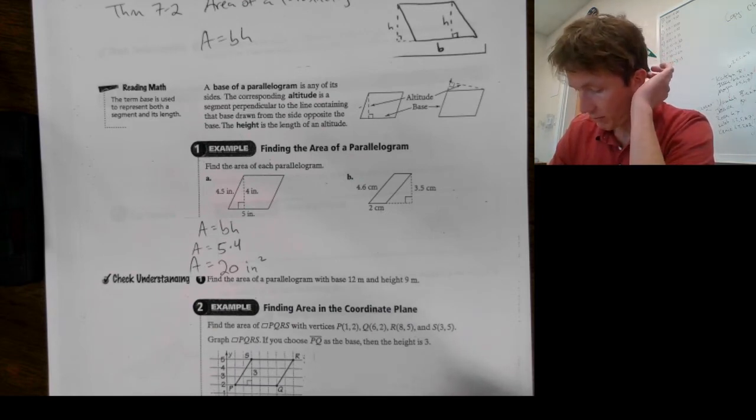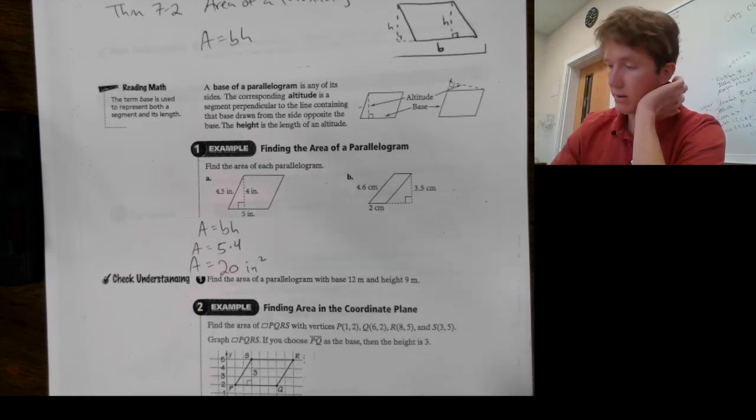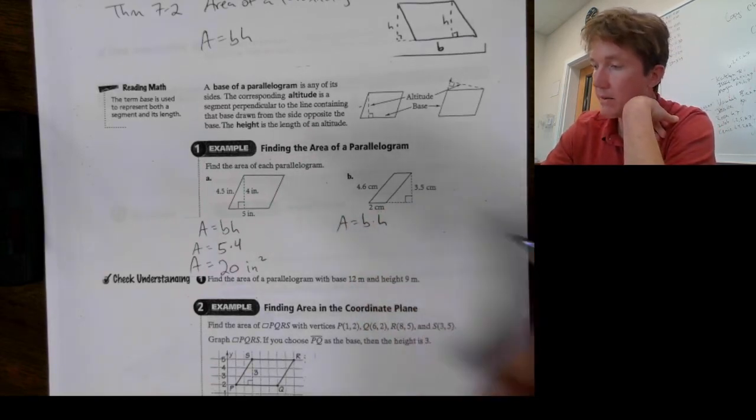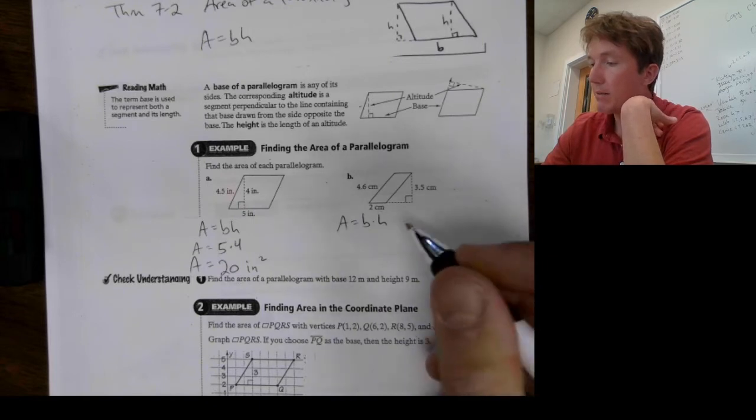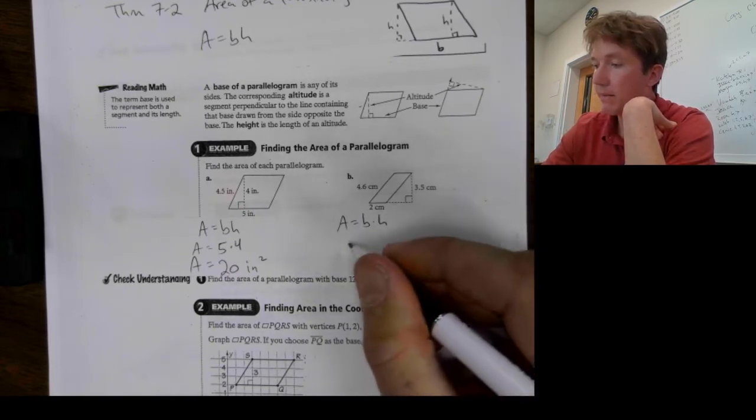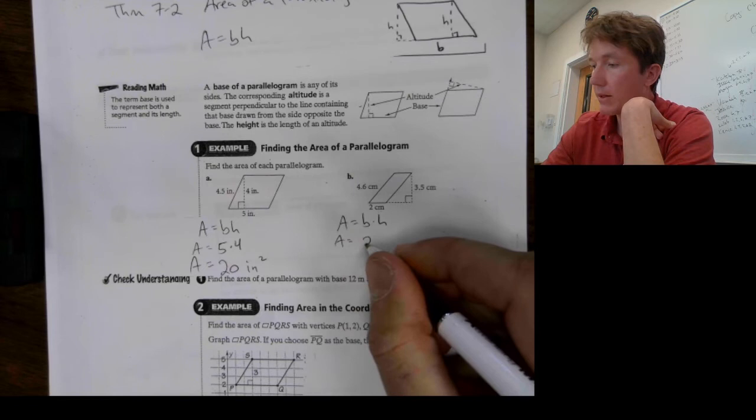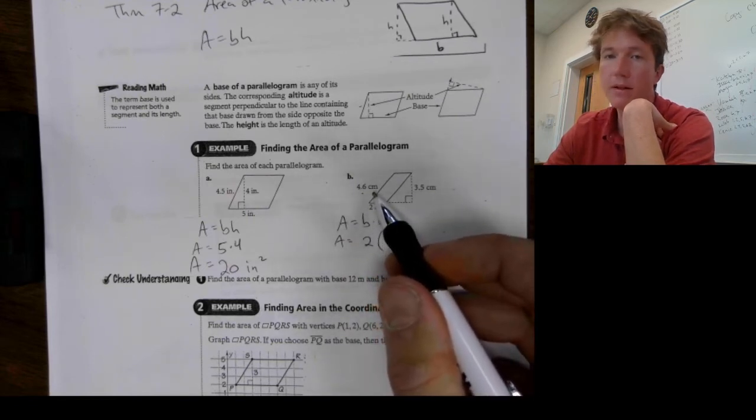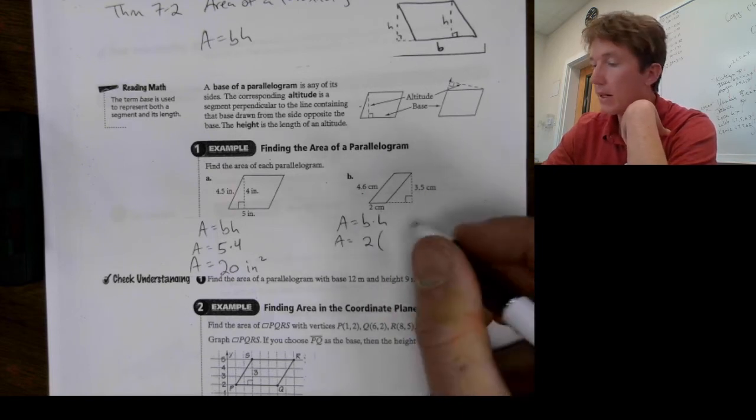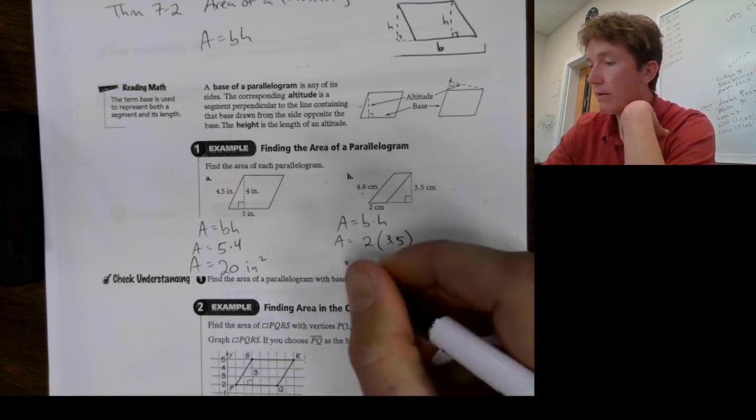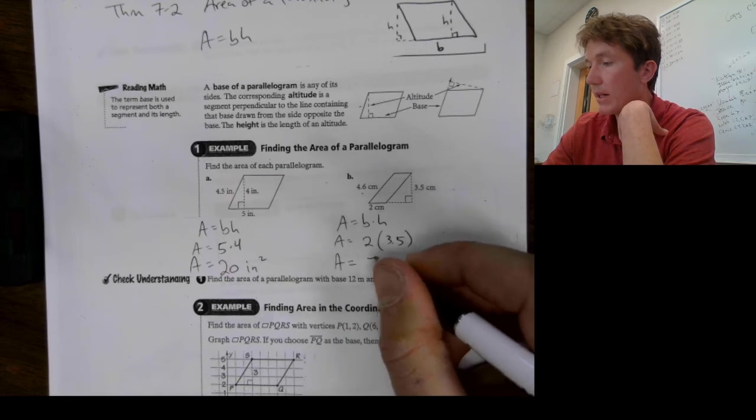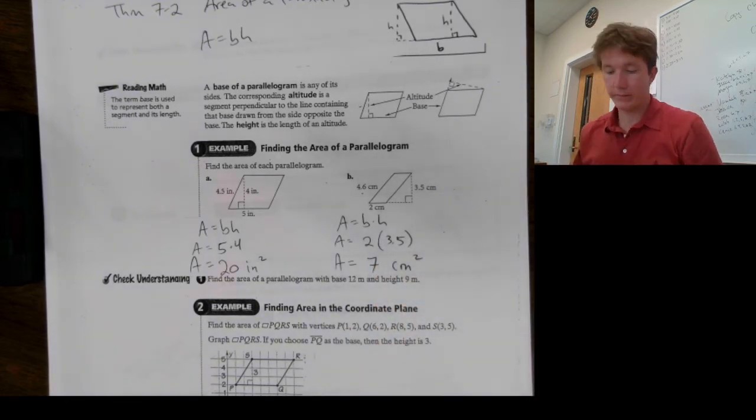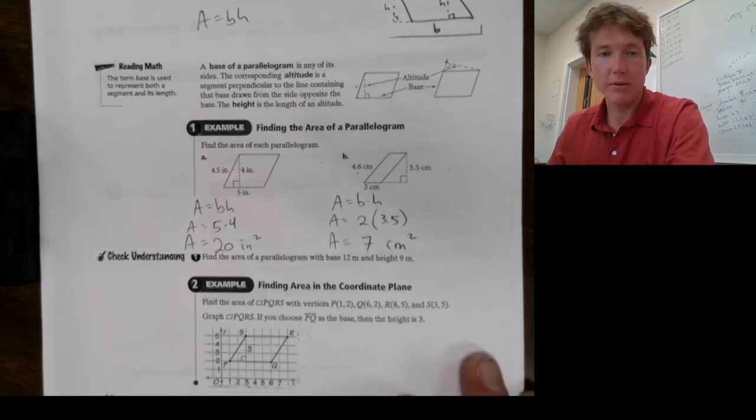Alright, next one. We have this parallelogram. So, again, this is gonna be base times height. I can see my base right here is 2 centimeters. So that's 2. Now, I think, is this my height? No, that's not up down. This is my height. That's up down. So, that's 3.5. So, my height here is gonna be 7 centimeters squared. Very cool.